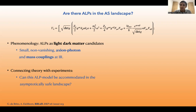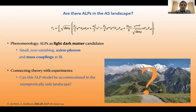This is very important, because if someone detects an axion in nature, then our approach — our theoretical approach — should be able to describe these particles, otherwise it would be falsified. So the question we want to answer is: can this ALP model be accommodated in our landscape?